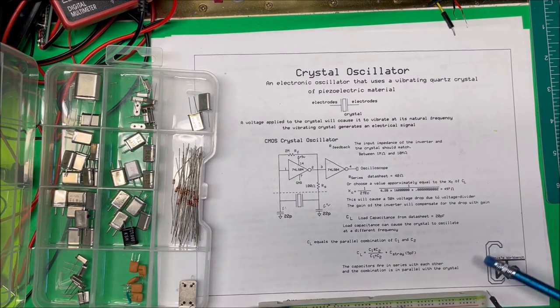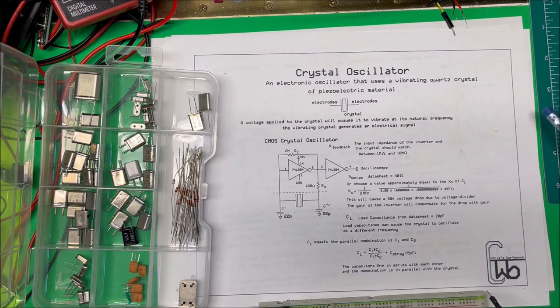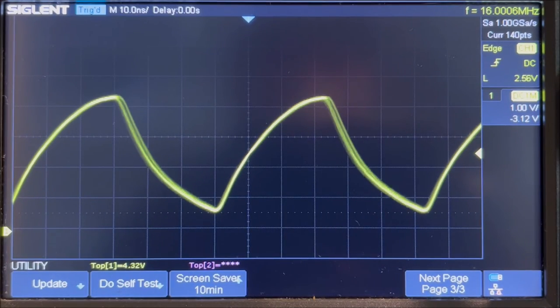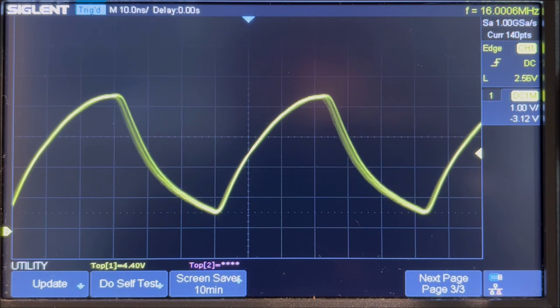So we'll go over to the oscilloscope and take a look. All right, here we are at the oscilloscope, and if you take a look in the upper right-hand corner, it says that the crystal is at 16.0006 megahertz.